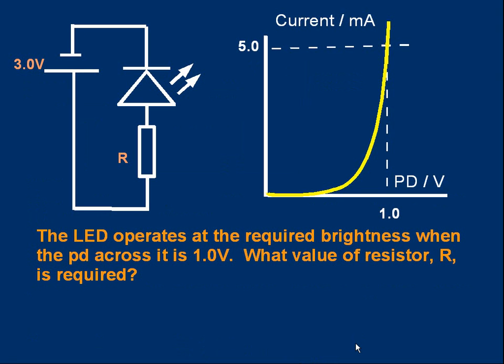Let's do another one. This is a fairly common question in exams, or questions similar to this are quite common. Here's a three volt cell, here's a light emitting diode in series with a resistor R. This light emitting diode, LED, operates at the required brightness when the voltage, or PD, across it is 1.0 volts. And the question is, what value resistor is needed? That cell provides 3 volts, but the diode only needs 1 volt across it. So what value of resistance will give that? And to help us, here's part of the diode's characteristic curve that you can use when you answer the question. So pause the video, try this one.